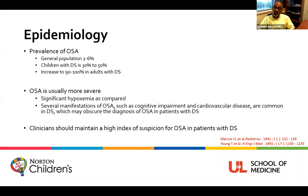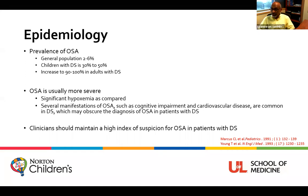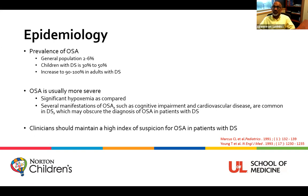Obstructive sleep apnea is usually more severe in children with Down syndrome and is significantly associated with low oxygen levels compared with normal children. Several manifestations of sleep apnea, such as cognitive impairment and cardiovascular problems, are very common and may obscure the diagnosis of obstructive sleep apnea in patients with Down syndrome. As physicians, we always have a high index of suspicion for screening children with Down syndrome regardless of symptomatology.